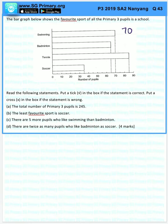Swimming has 70, badminton has 65, tennis has 85, and soccer has 35. So adding all together, we will get a total of 255, so the first one is wrong.